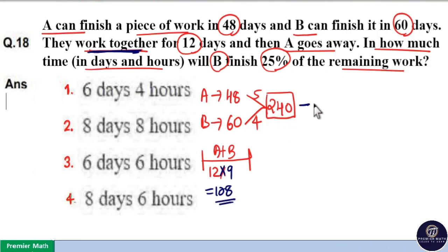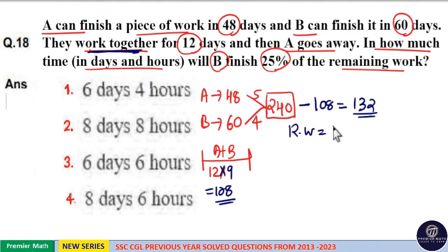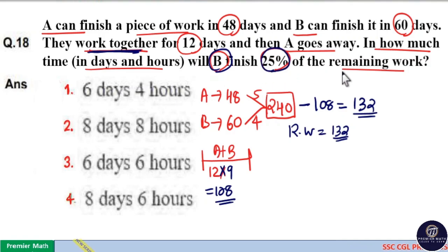So remaining work is equal to total work 240 minus 108 which is equal to 132 units. So remaining work is equal to 132 units. But here the question says, in how much time will B finish 25% of remaining work.